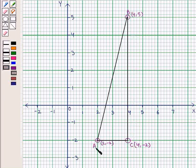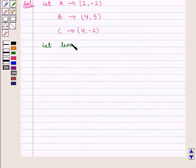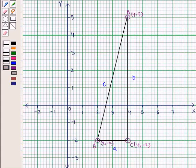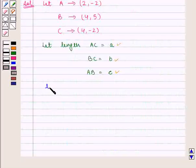Now let length of AC be a, BC be b, and AB be c. Now we shall find lengths a, b, and c. We see that the distance between A and C is 2 units, so length of AC, that is a, is equal to 2 units.